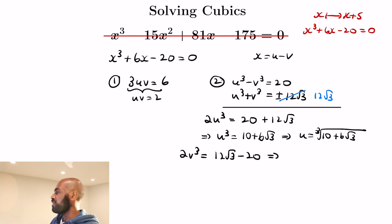So taking the second equation and subtracting the first equation, we get 2v cubed is 12 root 3 minus 20, so v is the cube root of 6 root 3 minus 10.